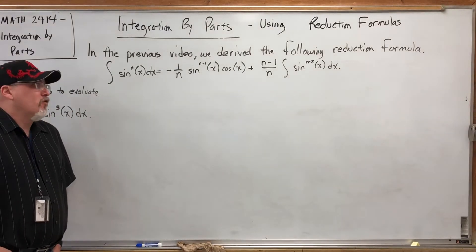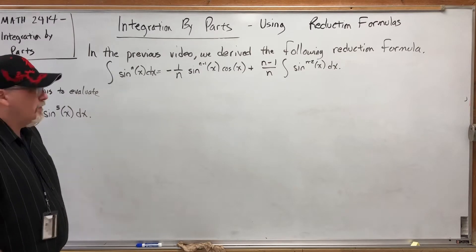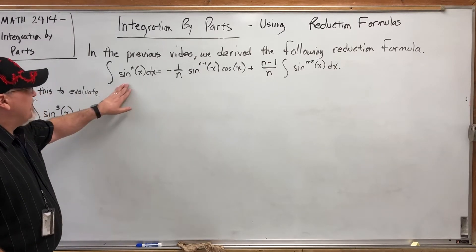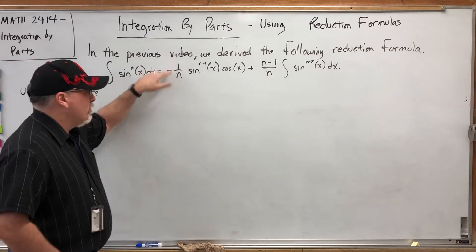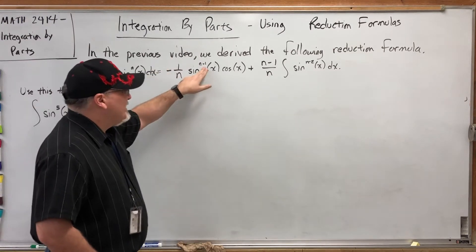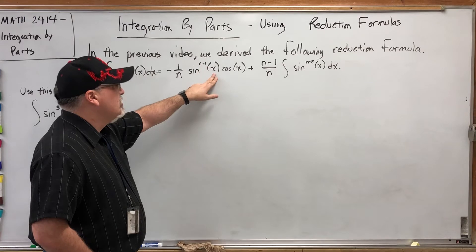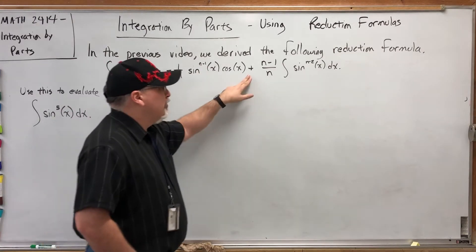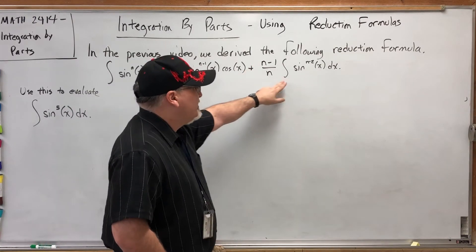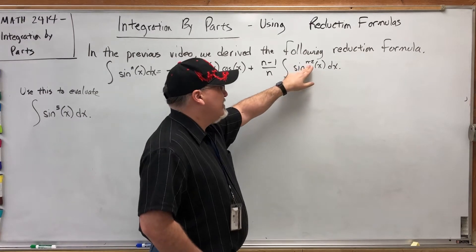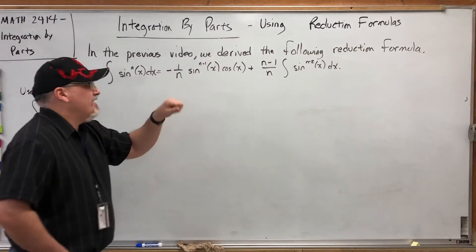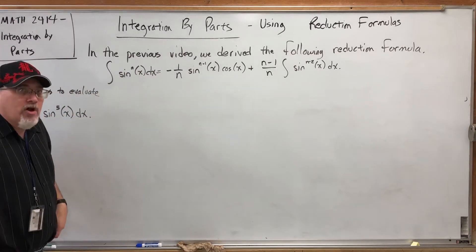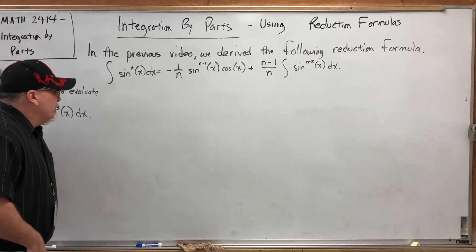Just a reminder, the reduction formula that we created in the previous video was the integral of sine to the nth power of x dx equals negative 1 over n times sine to the n minus 1 power of x times cosine of x plus n minus 1 over n times the integral of sine to the n minus 2 power of x dx. Everywhere there's an n, that was just the original power of sine in the original integrand.